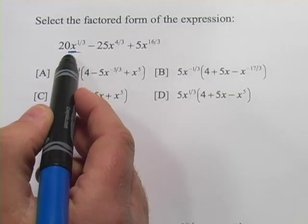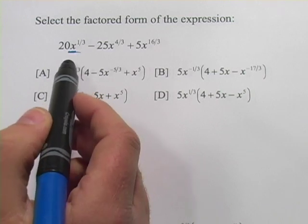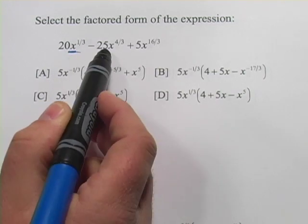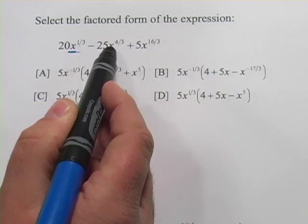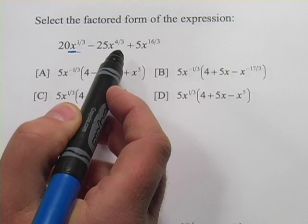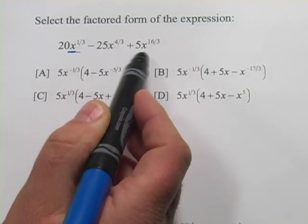The way to think about this is what is the smallest x term I have, something that's included in all of these. And x to the 1/3 would fit into all of these. I've got only 1/3 here, but I've got 4/3 here and 16/3 here, so I can definitely take out an x to the 1/3 from each of these.